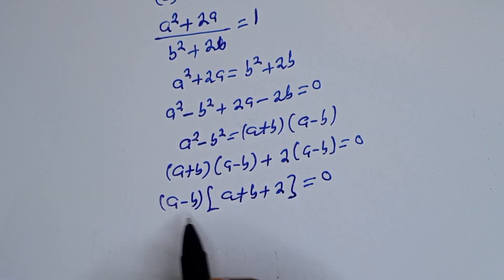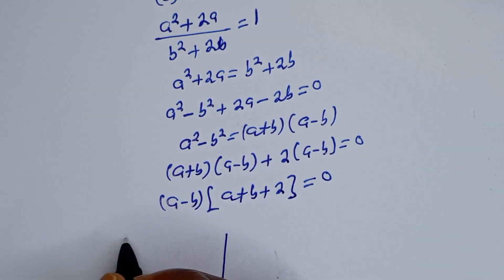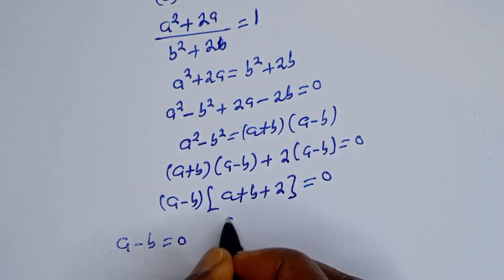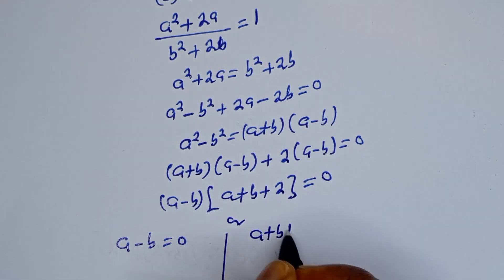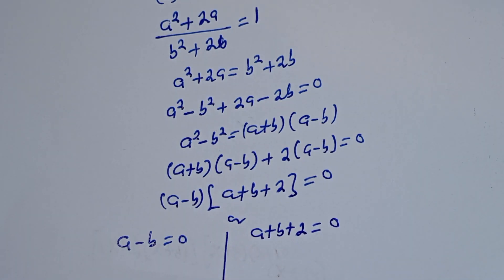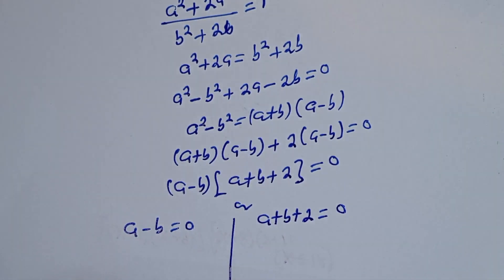There are two cases here. The first case is A minus B equals 0, and the second case is A plus B plus 2 equals 0. Now let's consider the first case.